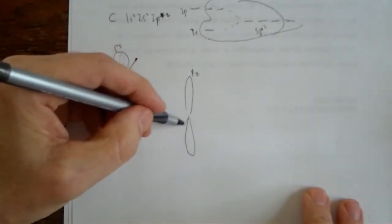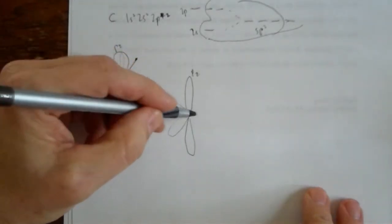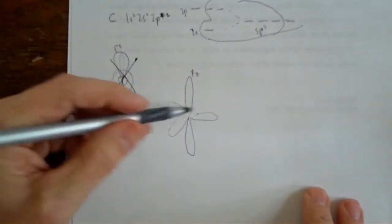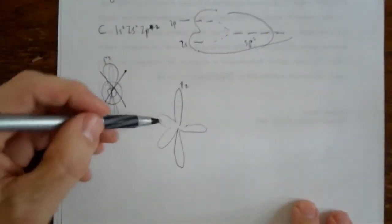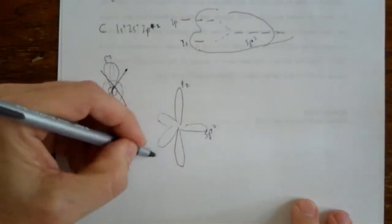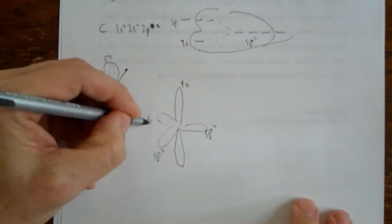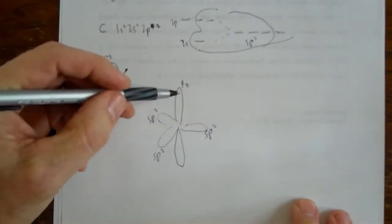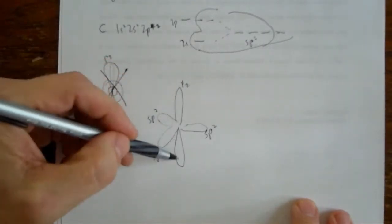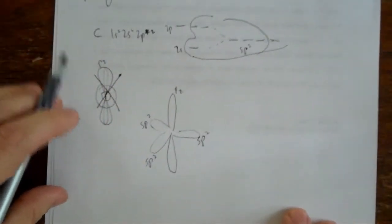So let's draw that. If we have one unhybridized p orbital, let's say it's the P sub z. It doesn't really matter which one it is, of course. Then we would have three identical orbitals that are around the perimeter of this or the equator of this.